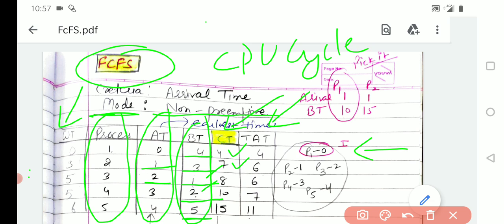So how are we completing this, how are we finding this completion? First it will take 4 units for P1. For the next one it requires 3 more units. The total completion time would be 7.